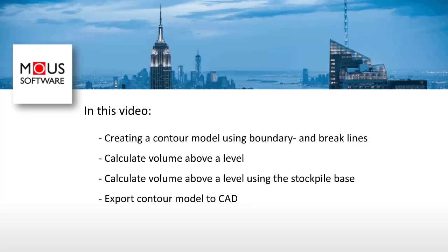To obtain an accurate result for stockpiles with sloping bases, the MCNX software will process two models. One model will contain the points which describe the top surface of the stockpile, the stockpile surface. And the second model will consist of points which describe the original ground surface under the stockpile, or the base surface. MCNX will calculate the volume from each of the models to a suitable chosen base level, and the difference between the two calculated volumes gives the volume of the stockpile. Finally, at the end of this video, we will take a look at how to export the contour model to CAD, and the export options for further processing in CAD.